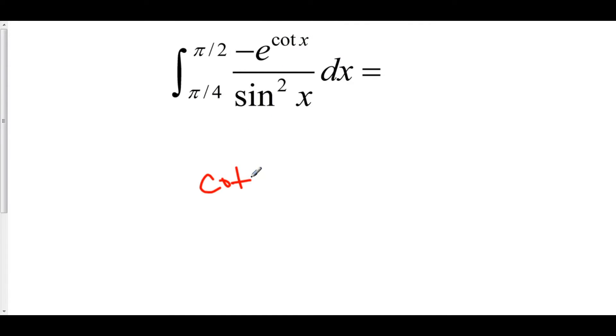Now the derivative of cotangent x is equal to negative cosecant squared x. Hmm. I don't have a cosecant... Wait a minute. Yes, I do. Because cosecant x is equal to 1 over sine of x. And look, I have a 1 over sine. Not only do I have a 1 over sine, I have a 1 over sine squared. So that means that my cosecant squared is 1 over sine squared. Not only that, but I have a negative in front too, which takes care of this negative in front of the cosecant squared x. So, let's try this out.